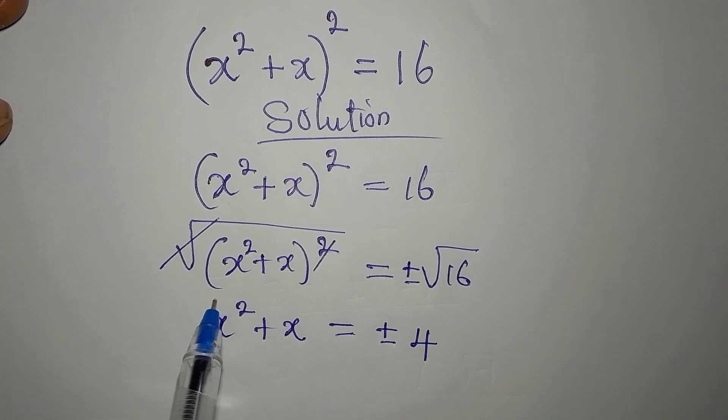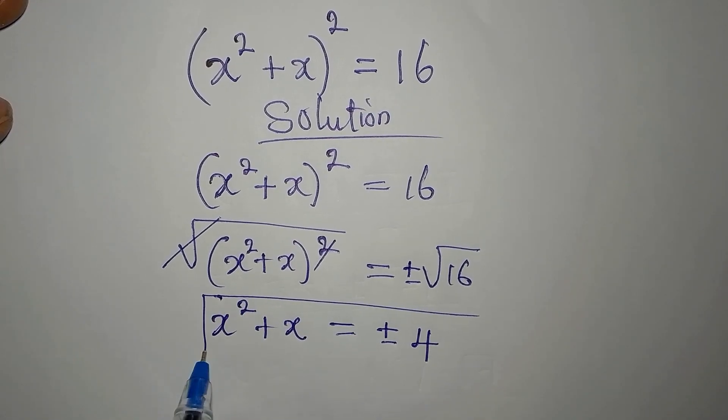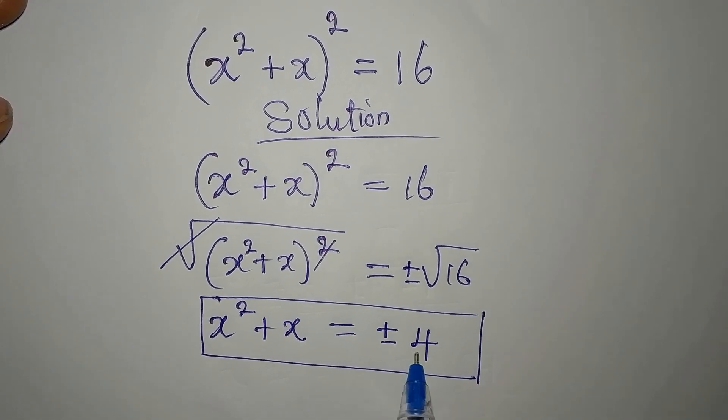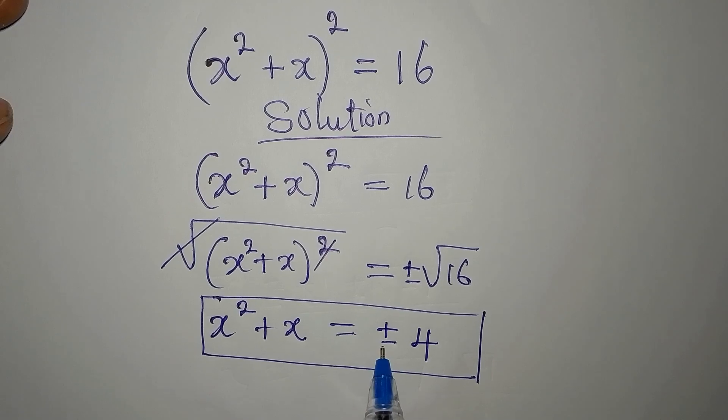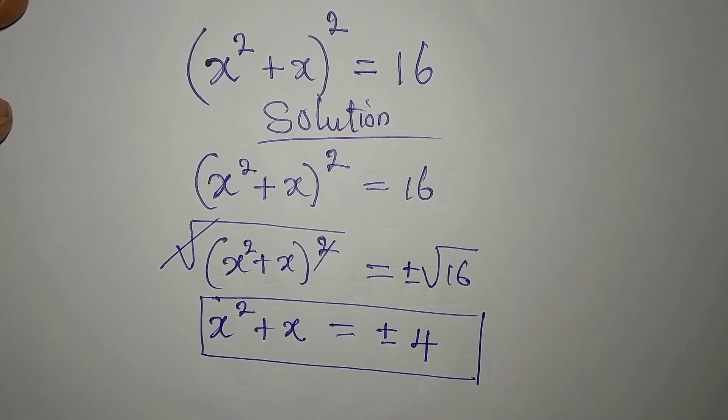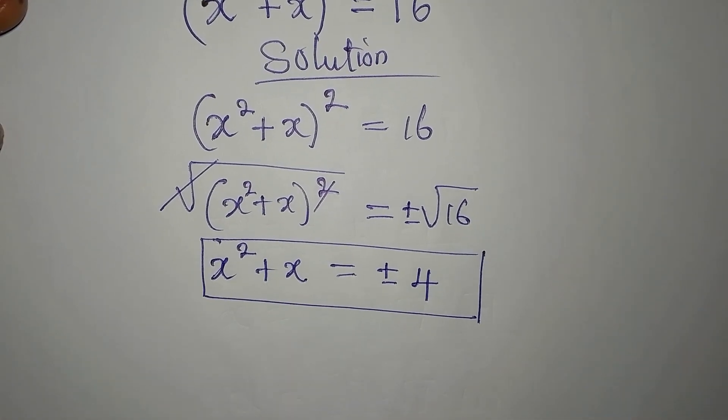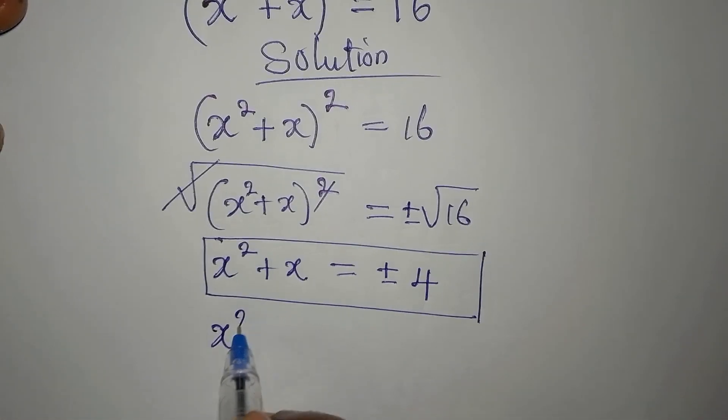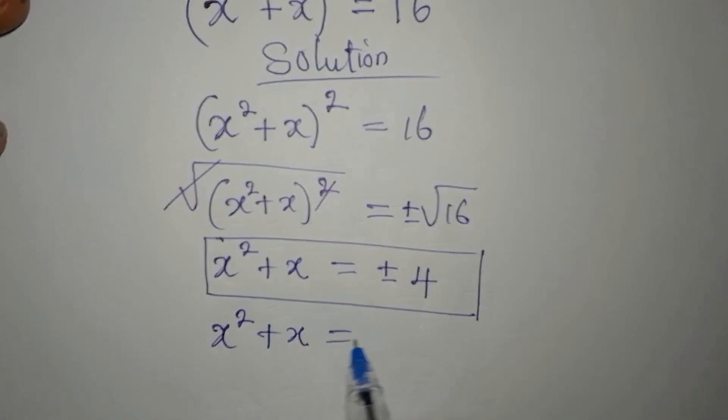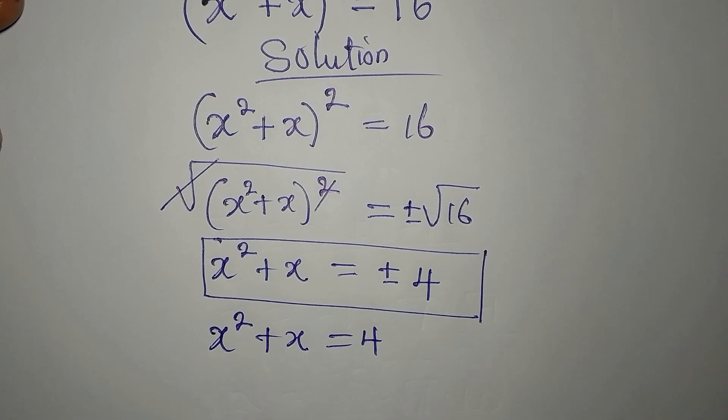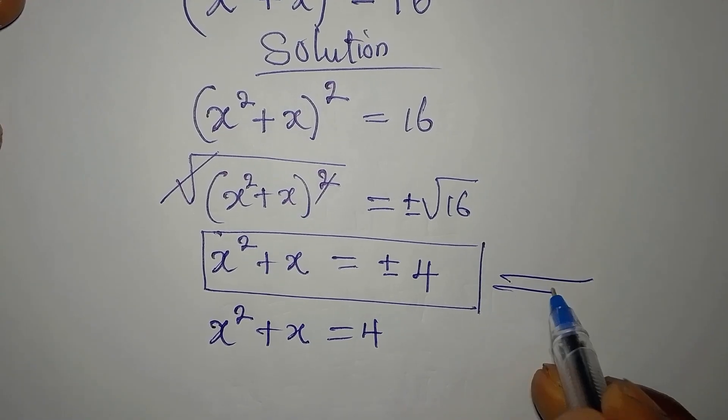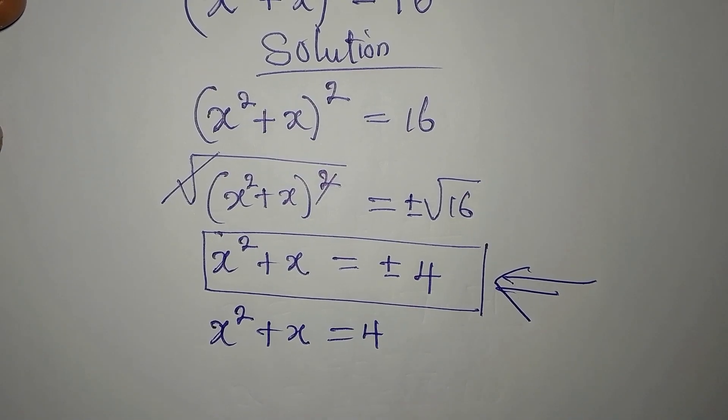Then we have x squared plus x being equal to plus or minus the square root of 16 is 4. Now, we have to take note of this equation because we are having two signs here. One equation is going to be positive and the other equation will be negative. So let's work with the positive one first. x squared plus x equals 4. Remember, I will get back here to deal with this.